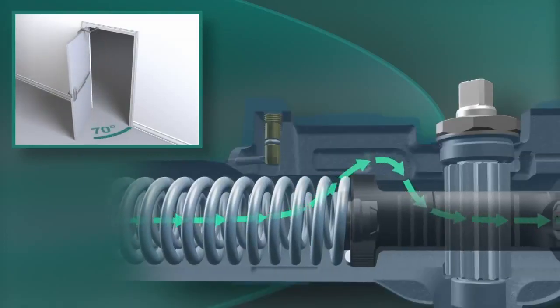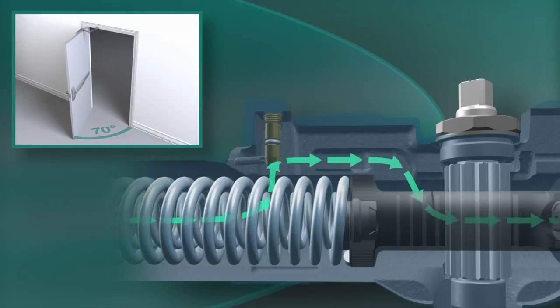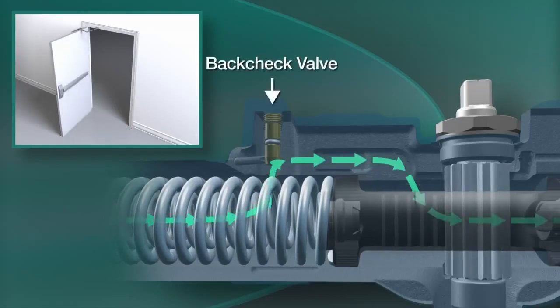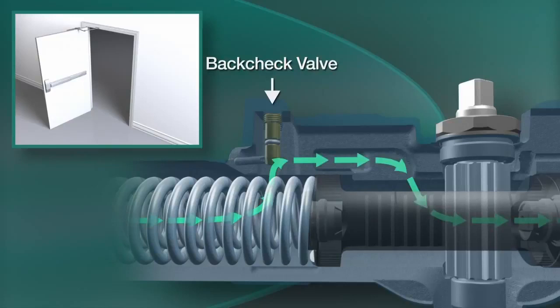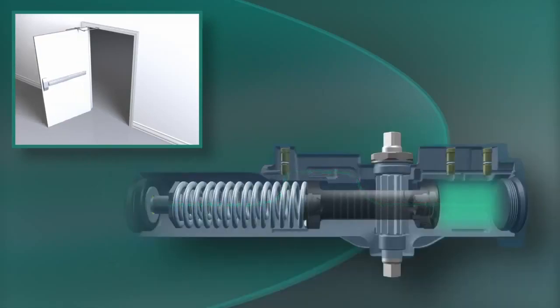When the door reaches about 70 degrees open, oil begins flowing through the back check valve, gradually increasing the amount of pressure required to open the door farther. This cushioning effect is called the back check function.